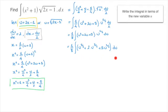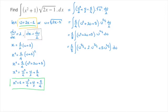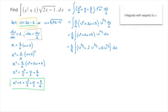We've rewritten our integral in terms of u and simplified as much as possible. Notice what this substitution has allowed us to do — we've turned a product of two functions into a sum of powers of u, and we know how to integrate powers. All we have to do now is use the power rule and integrate with respect to u.